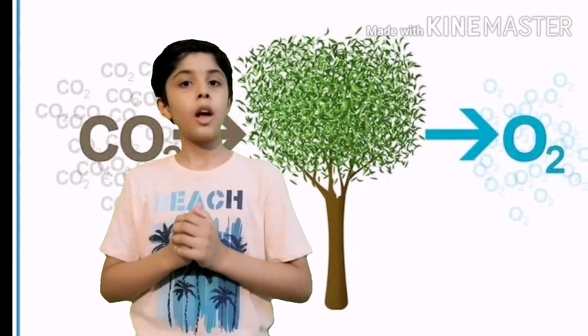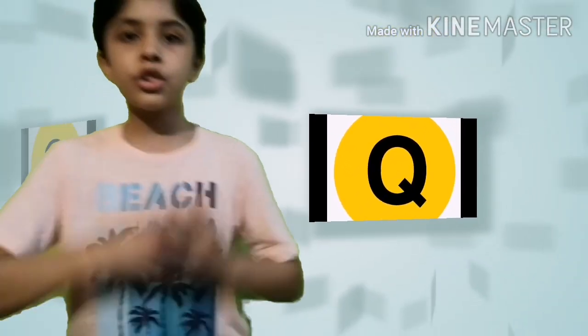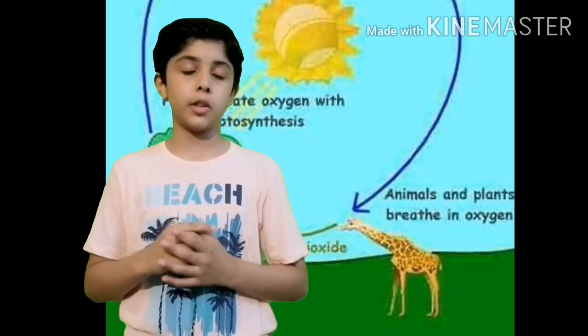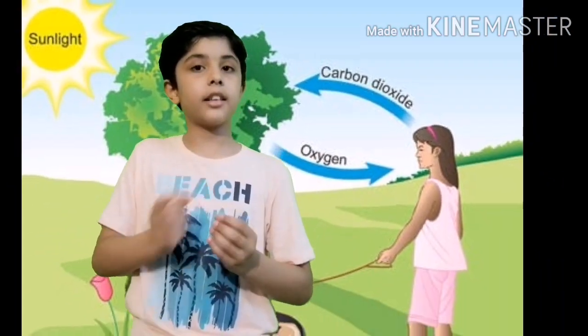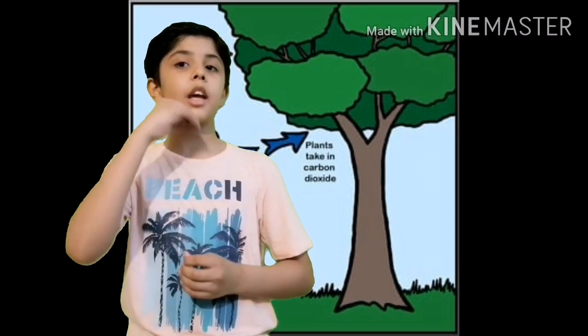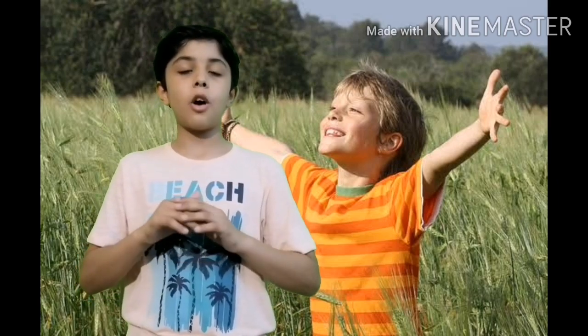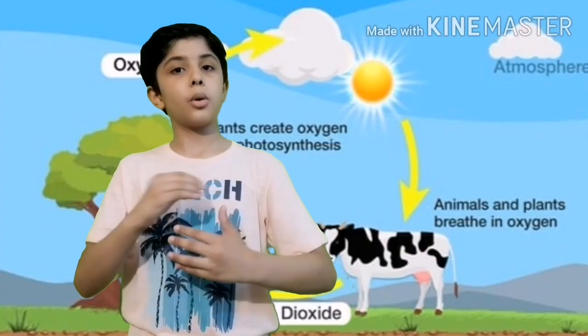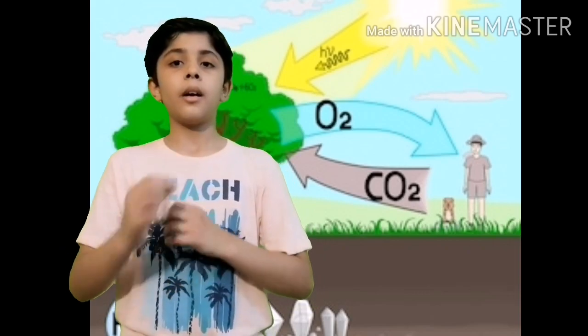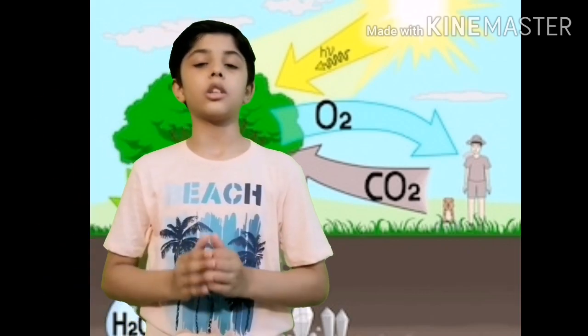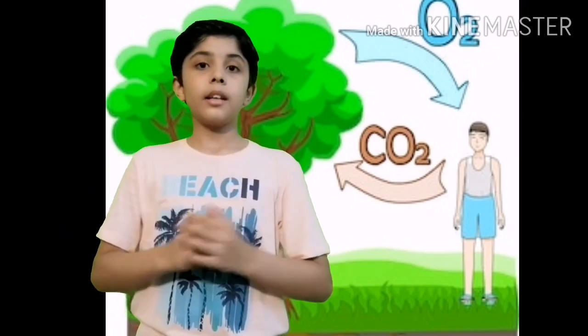Question number three: what is the nature balance? The nature balance is that we give out carbon dioxide and plants inhale it, then plants give out oxygen and we inhale the oxygen. Animals and humans give out carbon dioxide and take in oxygen, while plants take in carbon dioxide and give out oxygen. This is a blessing from Allah — it is the nature balance.